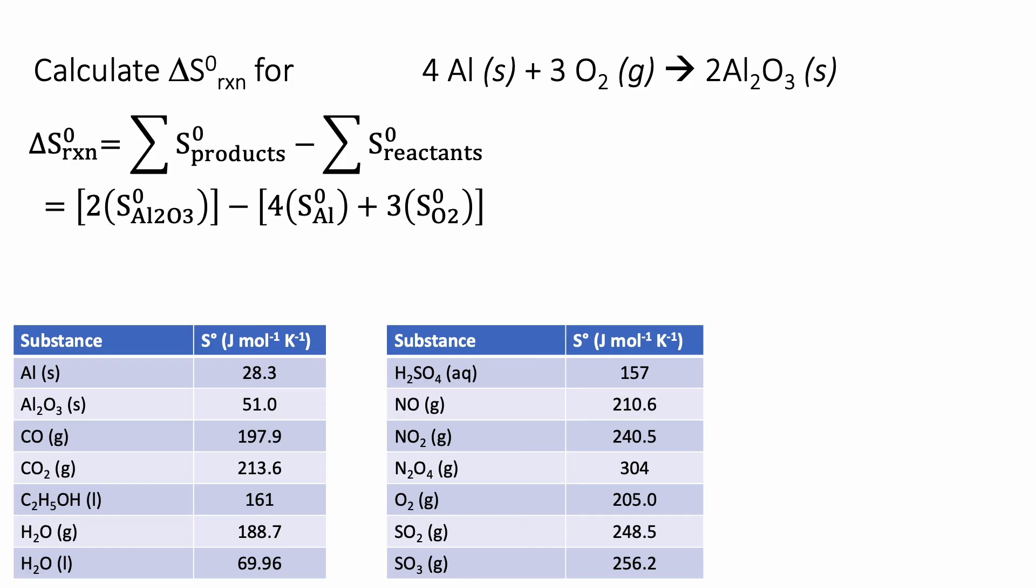So we have two times the entropy of aluminum oxide, four times the entropy of aluminum, three times the entropy of oxygen. So let's go through, we can find these in our table.